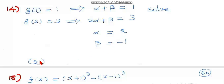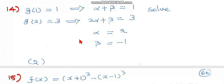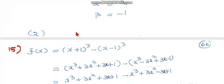Solving these two equations gives α = 2 and β = −1, so the second choice is correct. Instead of using ordered pairs (1,1) and (2,3), you can take any two ordered pairs — for example (3,5) and (4,7) — and you'll get the same answer. Then question number 15.